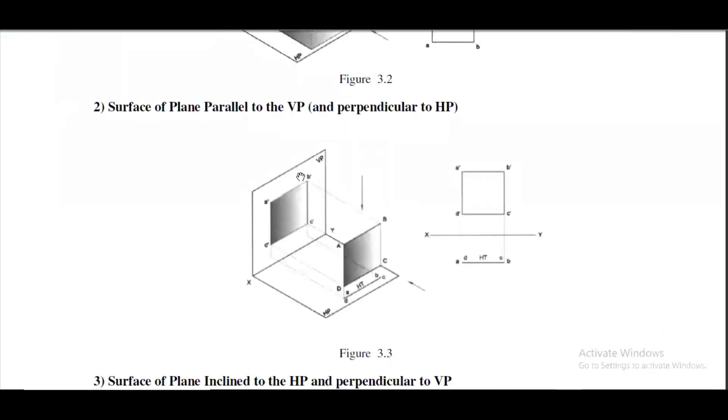Then we go for surface of the plane parallel to VP and perpendicular to HP. In this case this is exactly opposite of the first case. You can see the surface is parallel to VP and the sides are perpendicular to HP. In this case the exact original shape is being shown in the VP, that is front view, and the line will be shown in top view because the surface is perpendicular to HP.